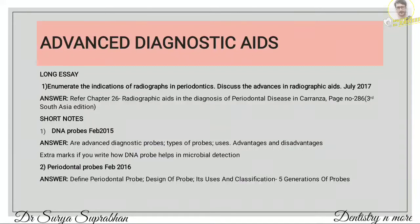For the second part of the question — advances in radiographic aids — you can write about CT, MRI, CADIA, CBCT, radioisotope scanning, subtraction radiography, and digital radiography. Write at least 2 to 3 lines about each of them.